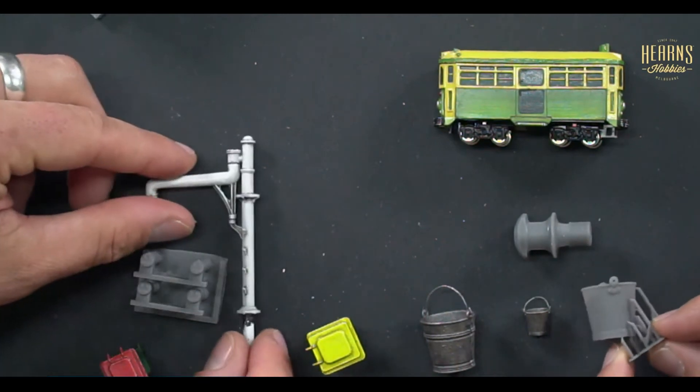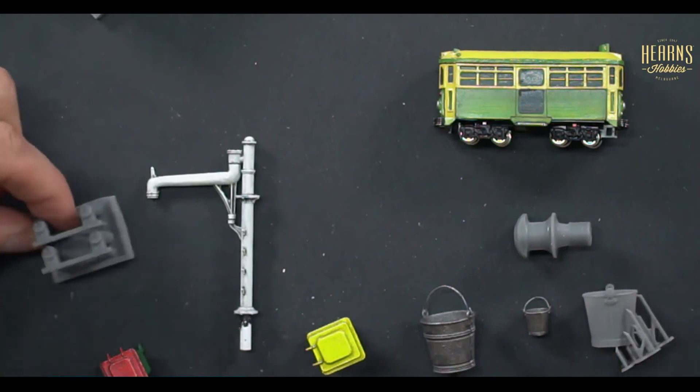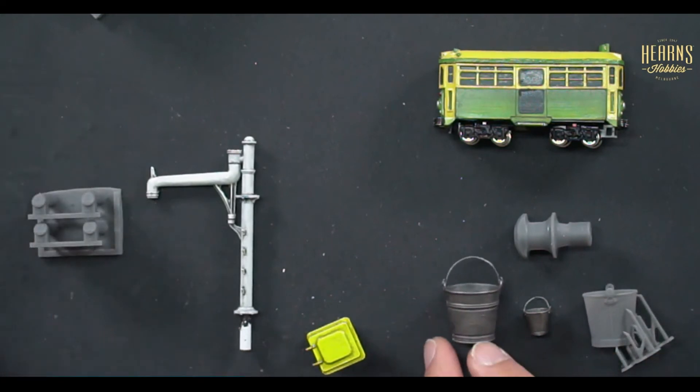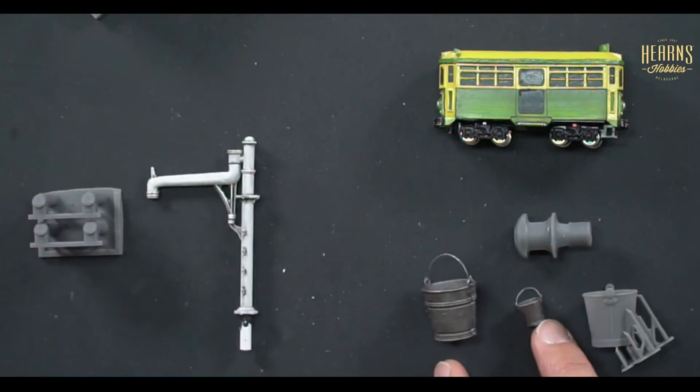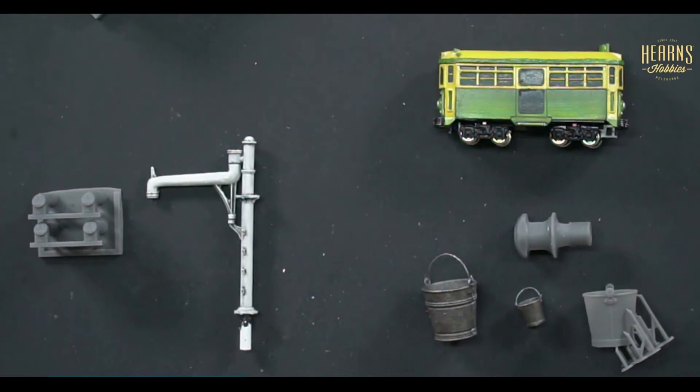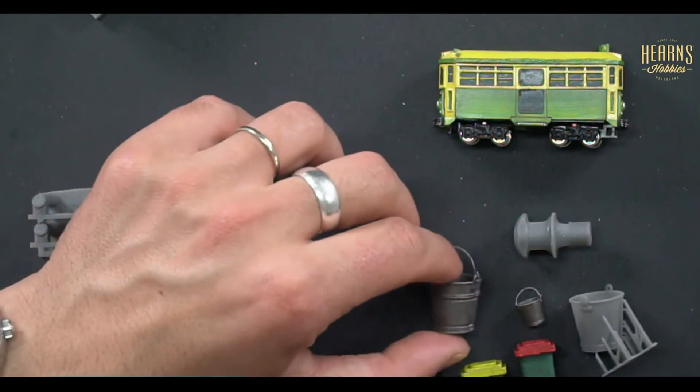That's what the bucket looks like as you get it. That's after painting. I've textured that one and painted it up. This is 35th scale. And this is a 35th scale rubbish bin to go with it.